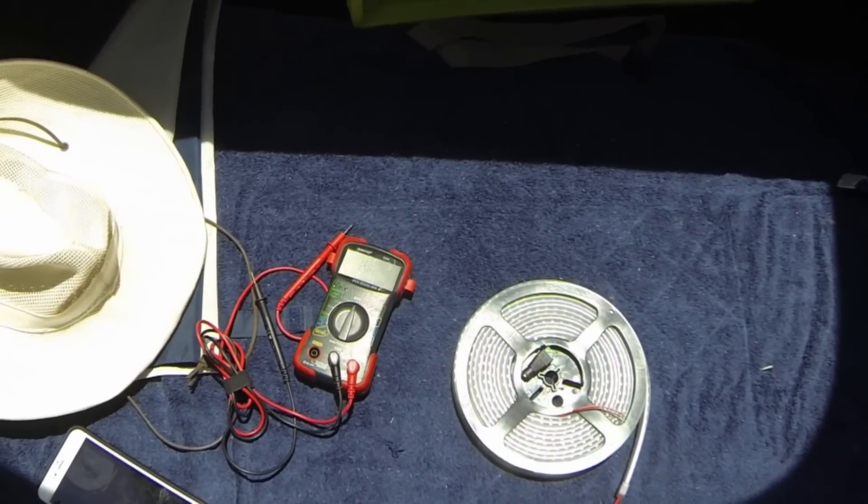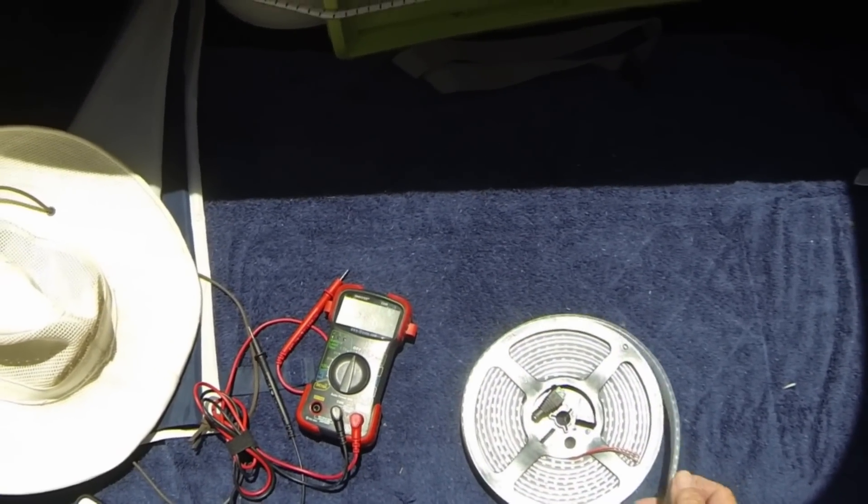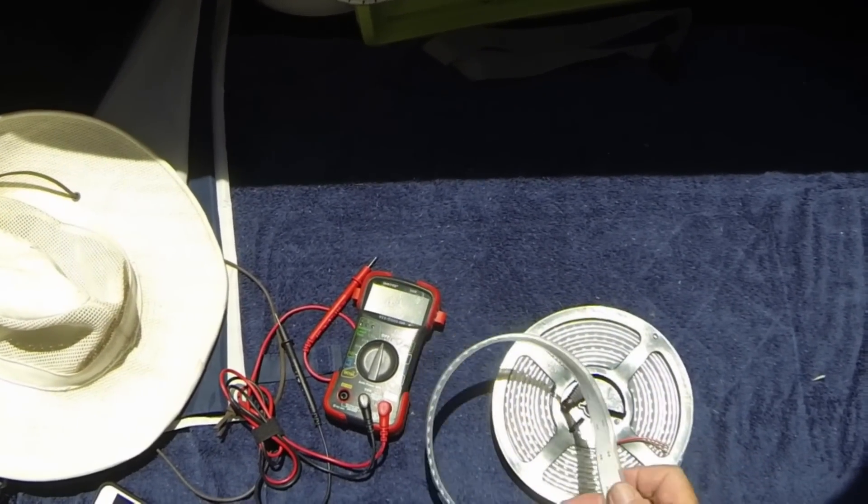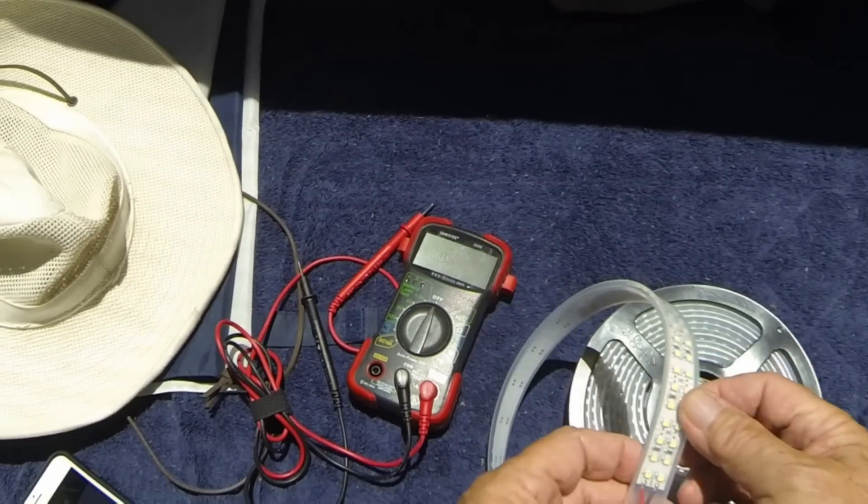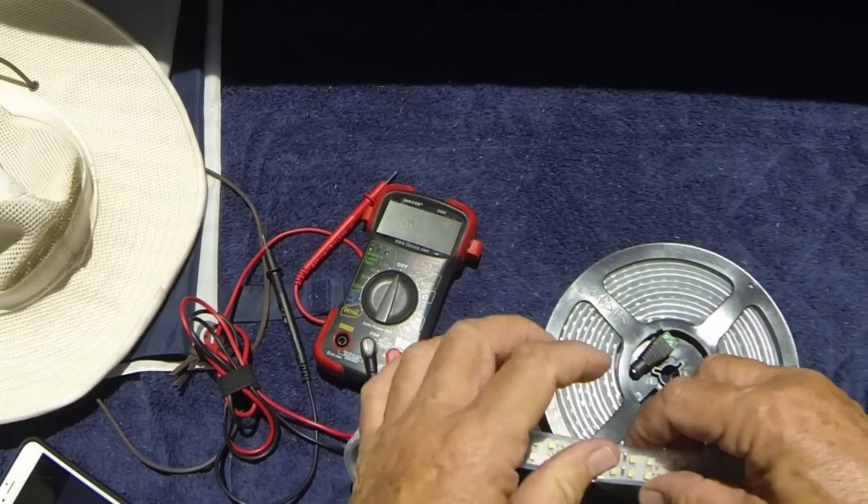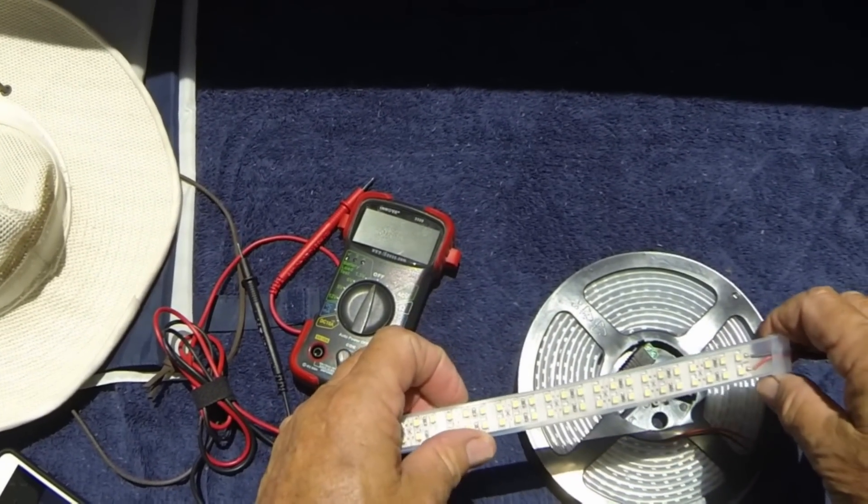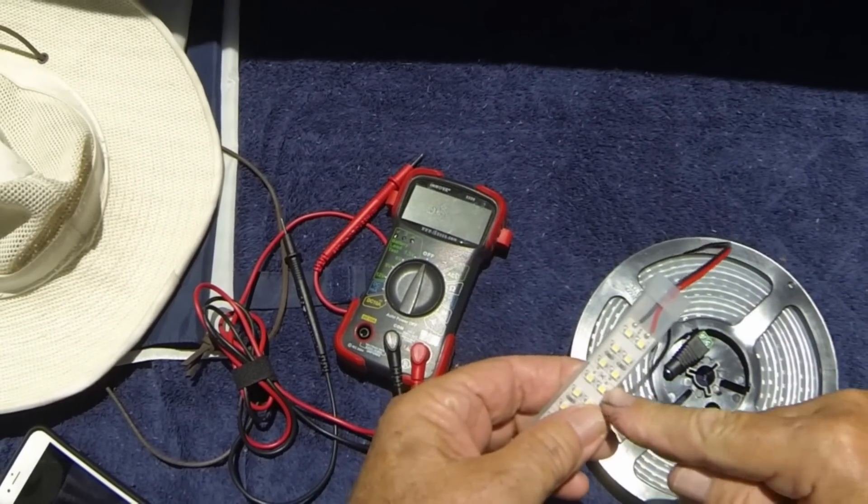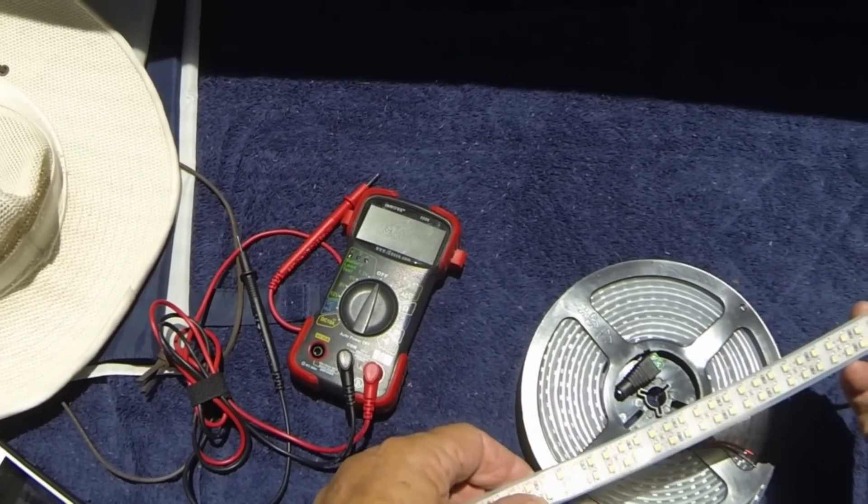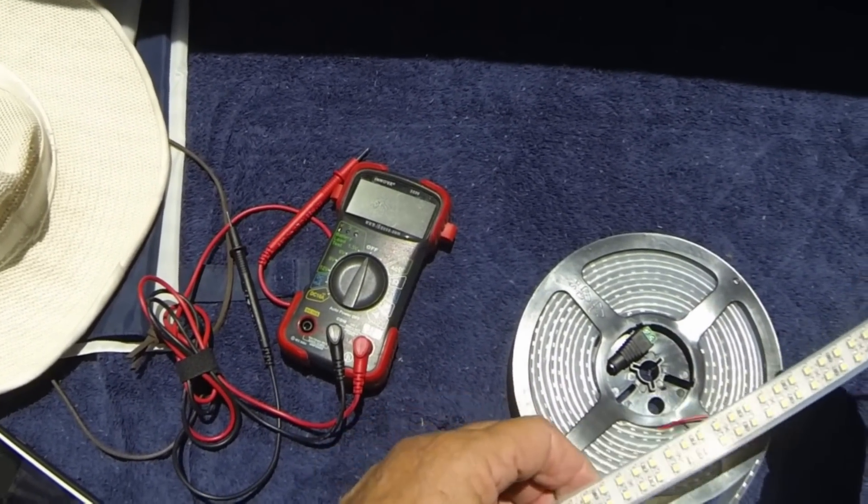The lights I'm going to use I bought on eBay, and they're waterproof because there's a coating around them. They're 12 volts, and you get about five yards for about 15 bucks, which is kind of crazy. There are little places you can cut them—you can cut almost any length you want.